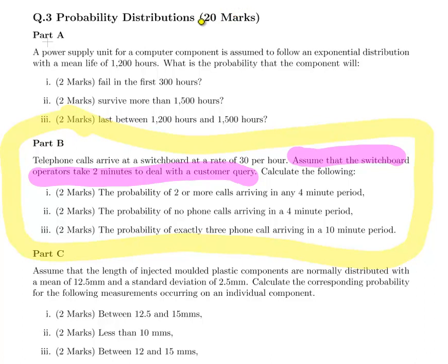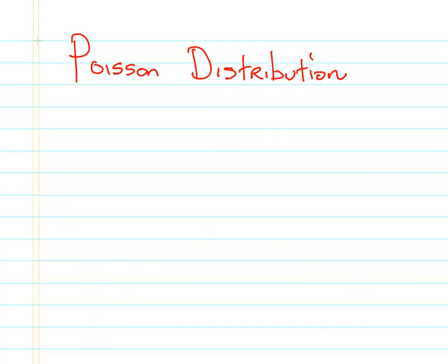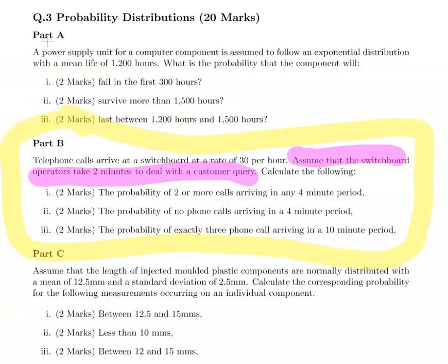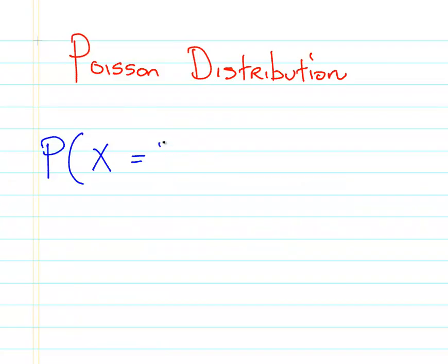What I'm going to do, just for the sake of ease, is solve this in reverse order. So first I'll do the last one: the probability of X equal to exactly three calls in a ten-minute period.